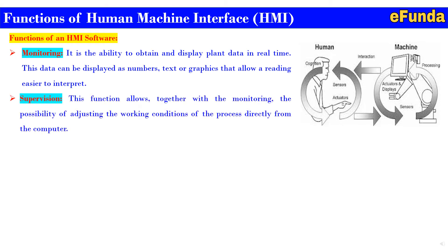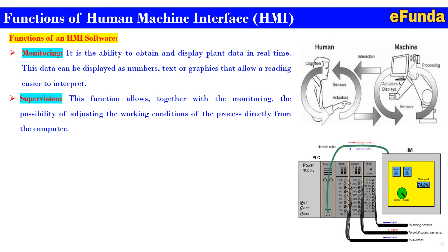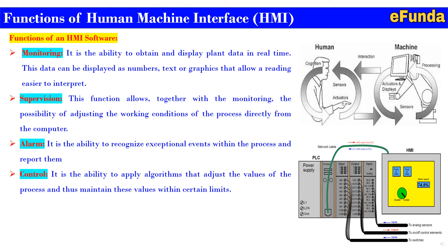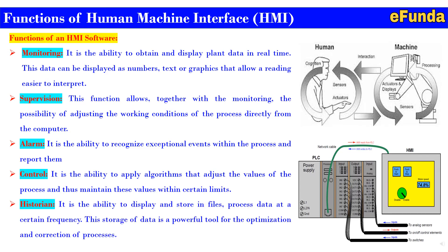Second, supervision: this function allows, together with monitoring, the possibility of adjusting the working conditions of the process directly from the computer. One can see the pictures where PLC and HMI are connected so as to have monitoring and supervision directly from the computer or HMI. Third, alarm: it is the ability to recognize exceptional events within the process and report them. Fourth, control: it is the ability to apply algorithms that adjust the values of the process and thus maintain them within certain limits. Fifth, historian: it is the ability to display and store process data in a file at a certain frequency. The storage of data is a powerful tool for optimization and correction of processes.